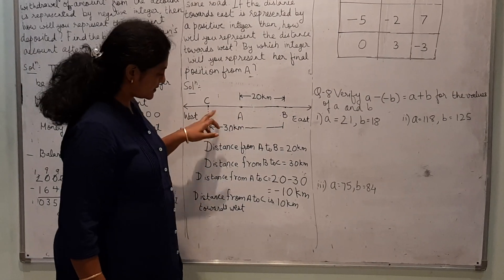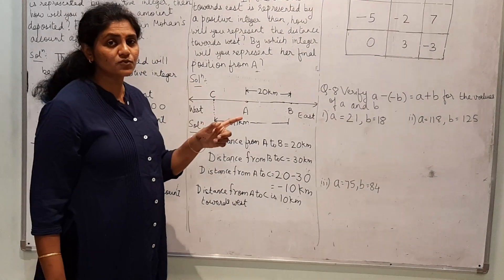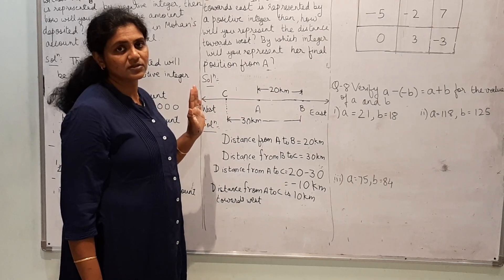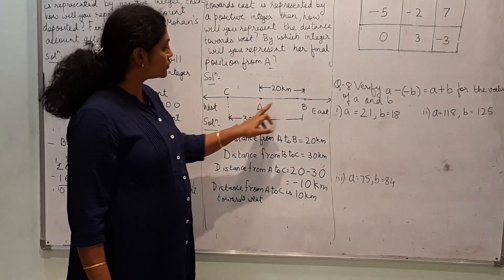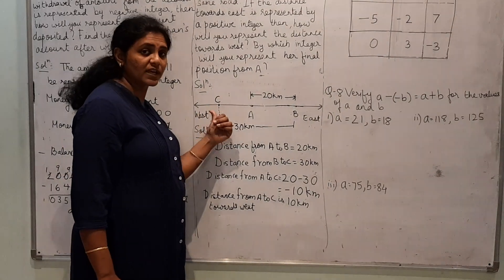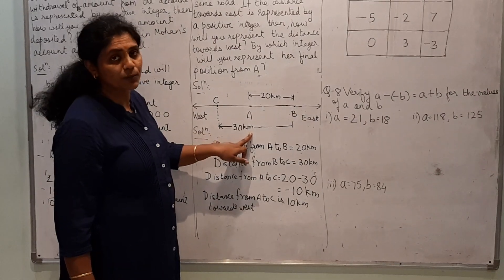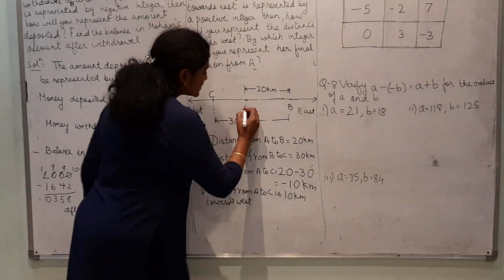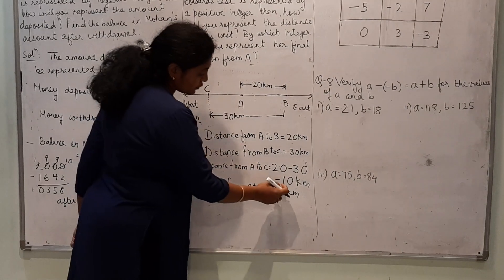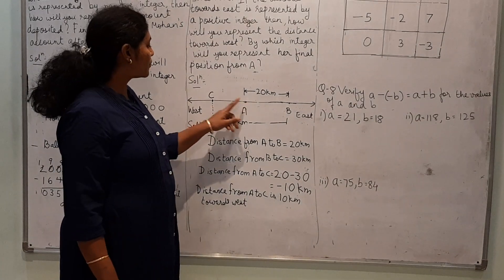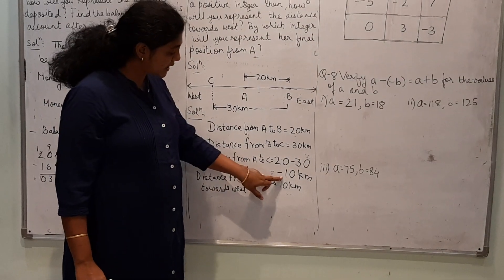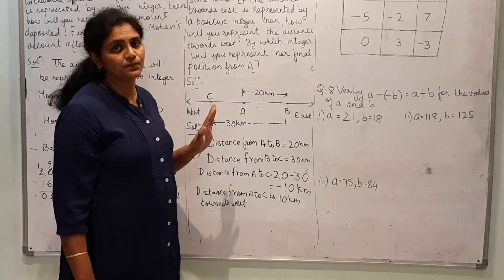The distance is 10 km, but since it is a negative integer, it is directed towards west. So the final distance from A to C is 10 km towards west. From A to B she travelled 20 km east, from B she came back to C, 30 km west. Initial to final point: plus 20 minus 30 equals minus 10 km, meaning 10 km towards west.